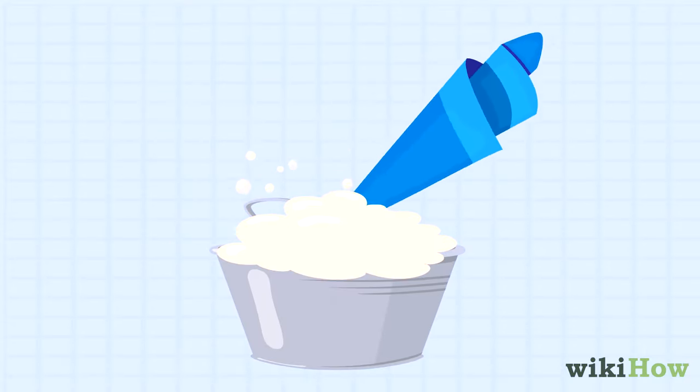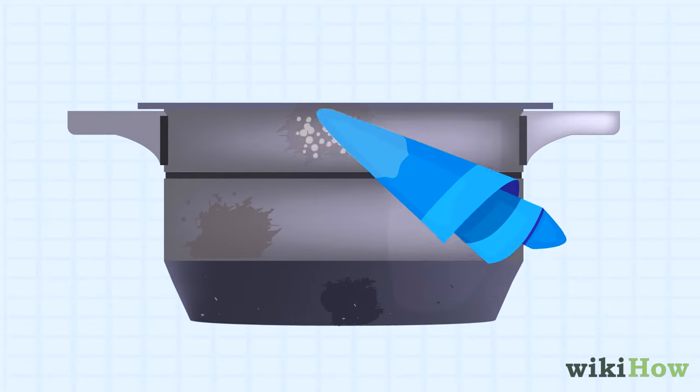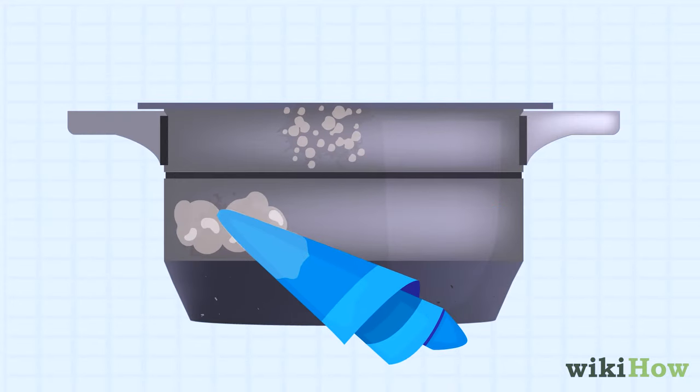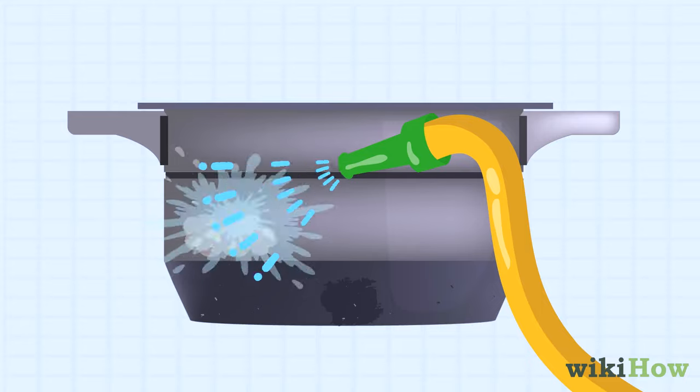Then, wet the cloth with soapy water and gently clean the aluminum with it. Rinse off the soapy residue and let the aluminum dry.